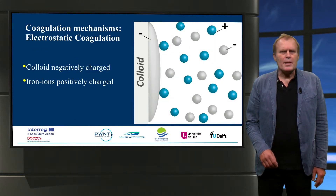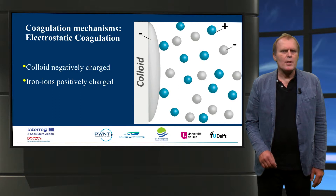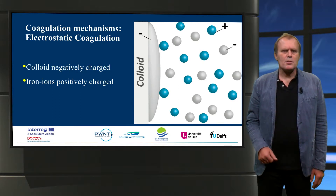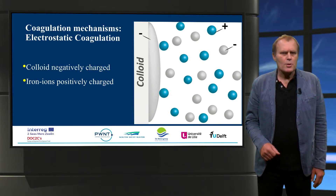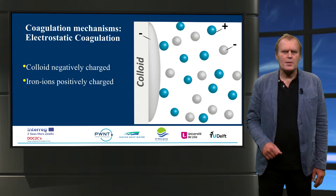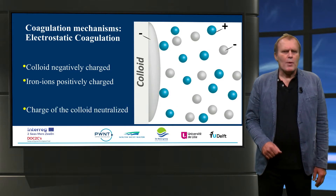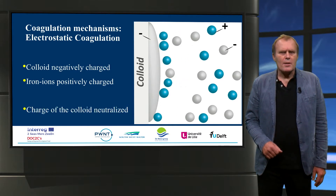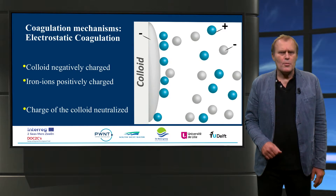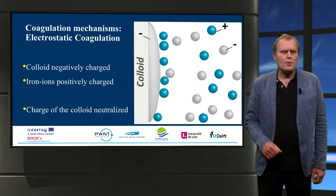Three different mechanisms are distinguished in coagulation. The first mechanism is electrostatic coagulation. Colloids in natural water are negatively charged. Iron ions are positively charged. When the iron ions adsorb on the surface of the colloids, the charge is neutralized and the colloids tend to merge.